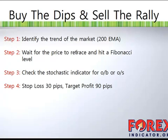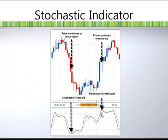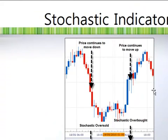Once the price hits the Fibonacci level, you go to your stochastic indicator to check whether it's overbought or oversold. The stochastic indicator comes with a 20 and 80 line. The 20 level means that anything lower than that is a sign of oversold; anything higher than 80 is a sign of overbought. You can see when the price moved down, the stochastic moved down and got into the oversold region — it will usually bounce back up. When it gets overbought, it's very likely to move down. This indicator helps us tell whether the market is currently overbought or oversold.